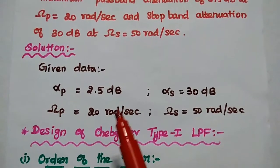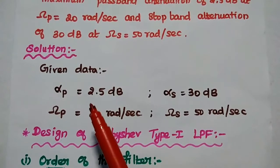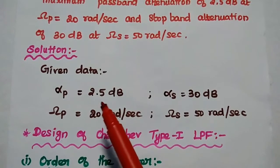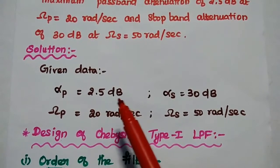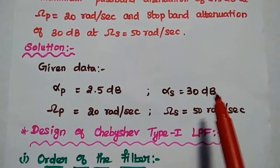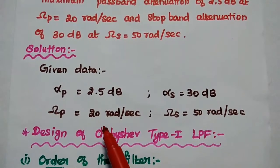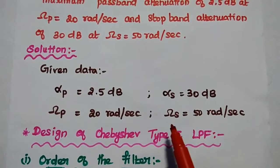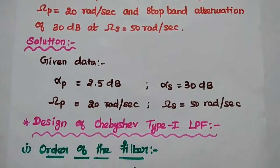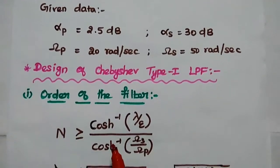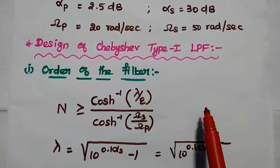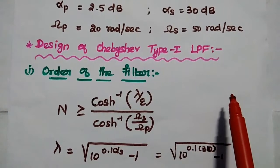In the solution part, first we write the given data: alpha_P is equal to 2.5 dB, alpha_S is equal to 30 dB, omega_P is equal to 20 radian per second, and omega_S is equal to 50 radian per second. Next, we are going to design the Chebyshev type 1 low pass filter step by step.